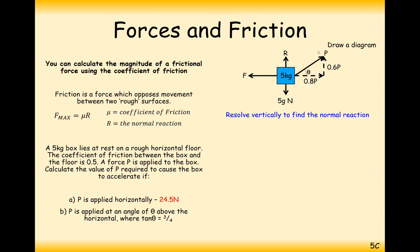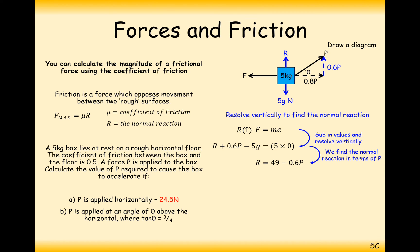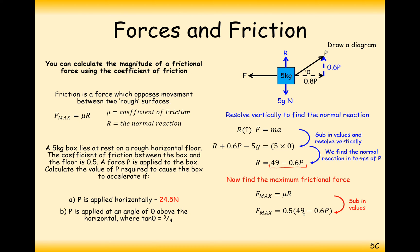Resolving vertically, R and 0.6P act upwards while 5g acts downwards, with no vertical acceleration. So R equals 49 minus 0.6P. Using this in the friction formula: maximum friction equals 0.5 times (49 minus 0.6P), which simplifies to 24.5 minus 0.3P.